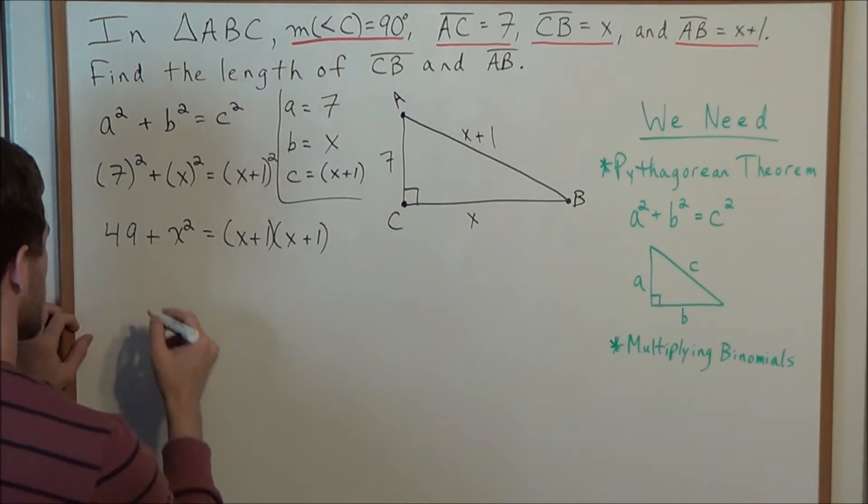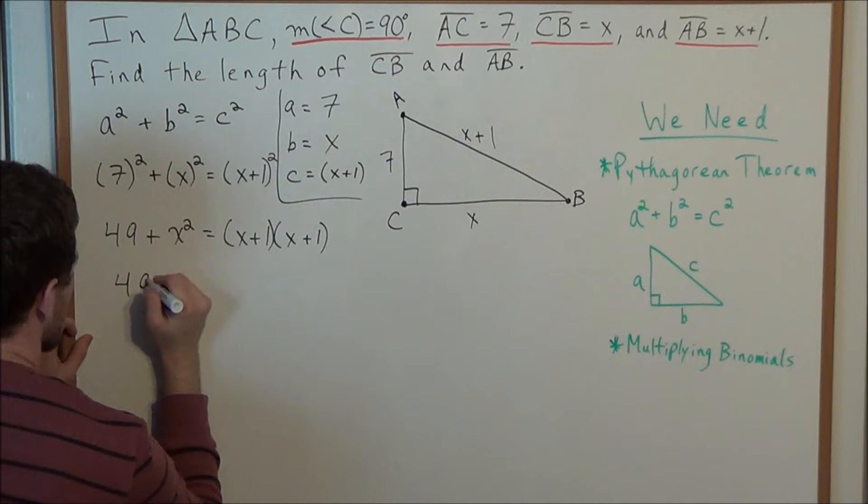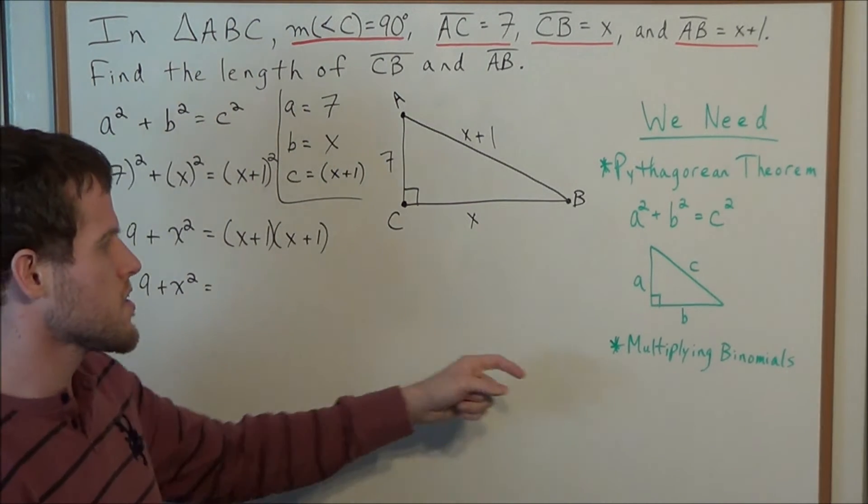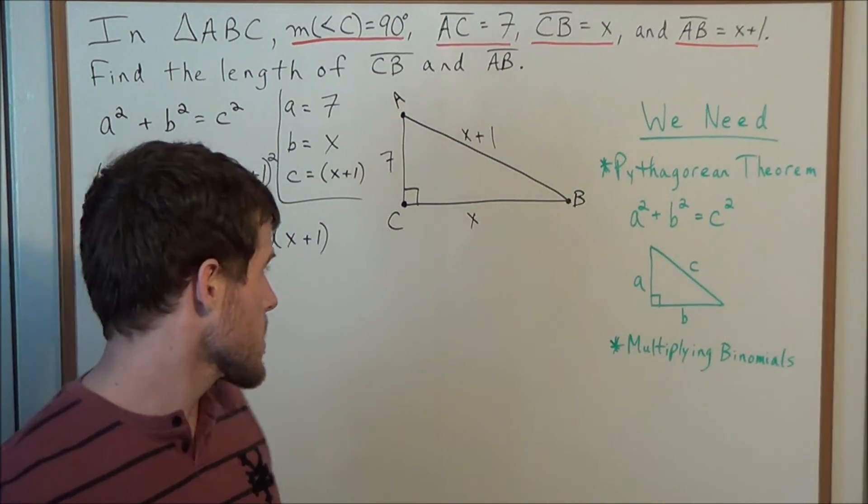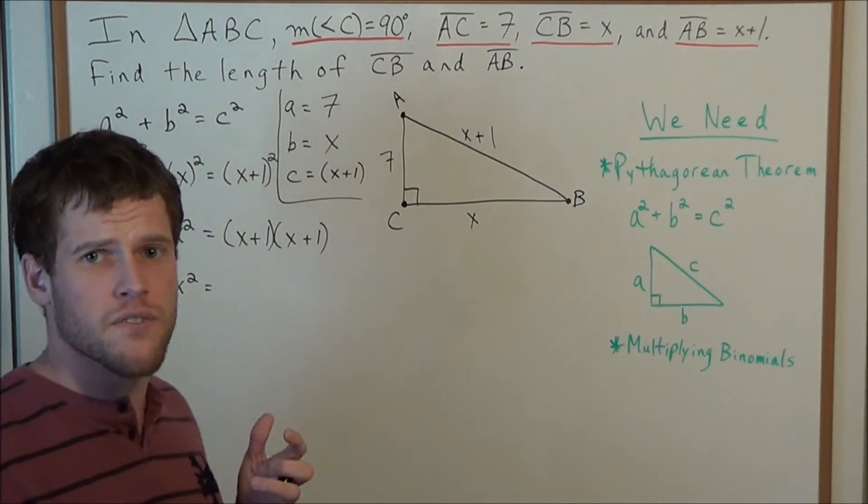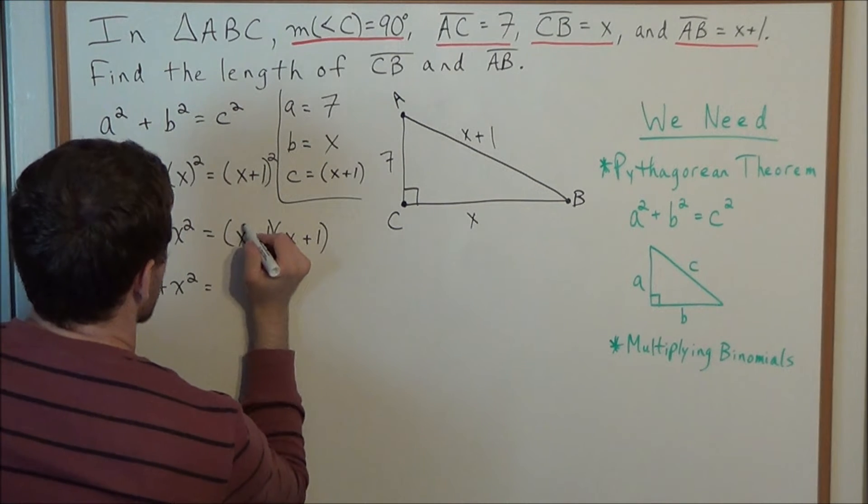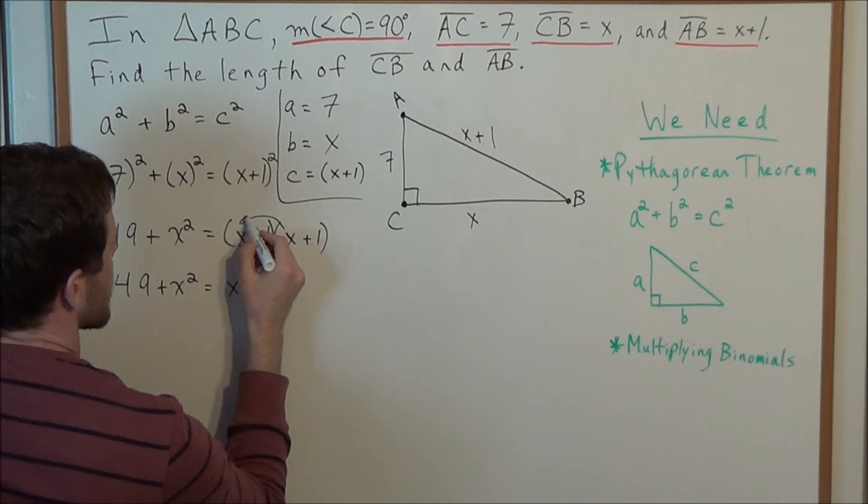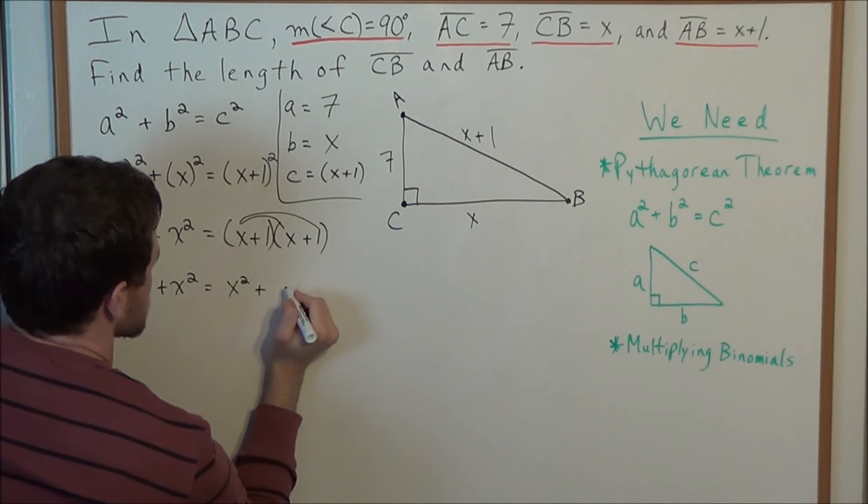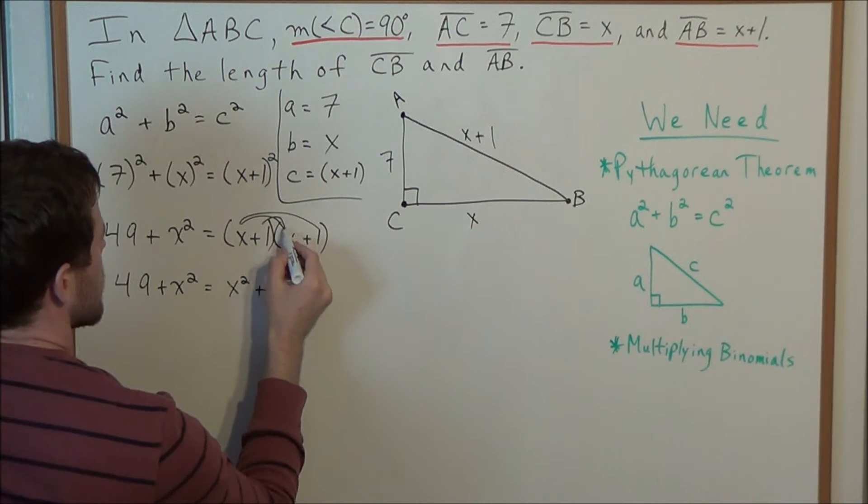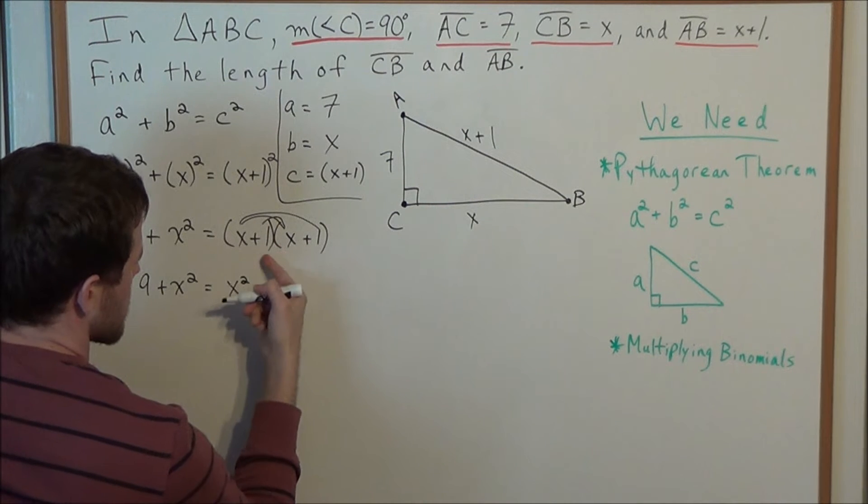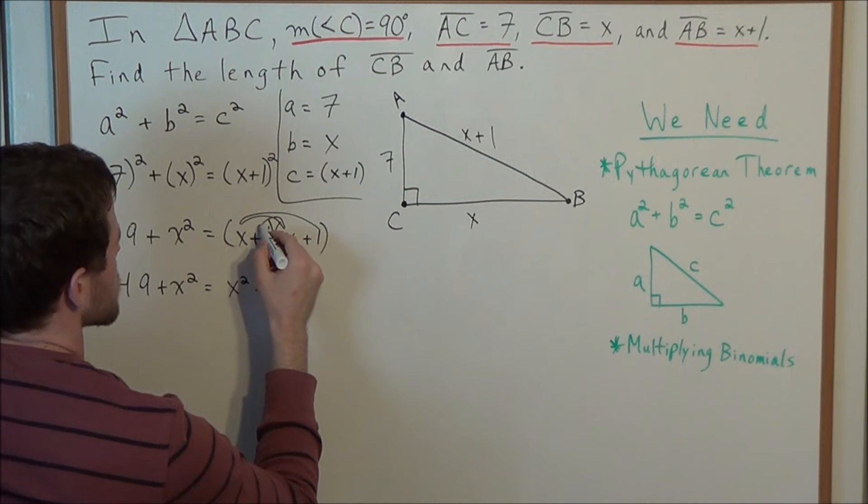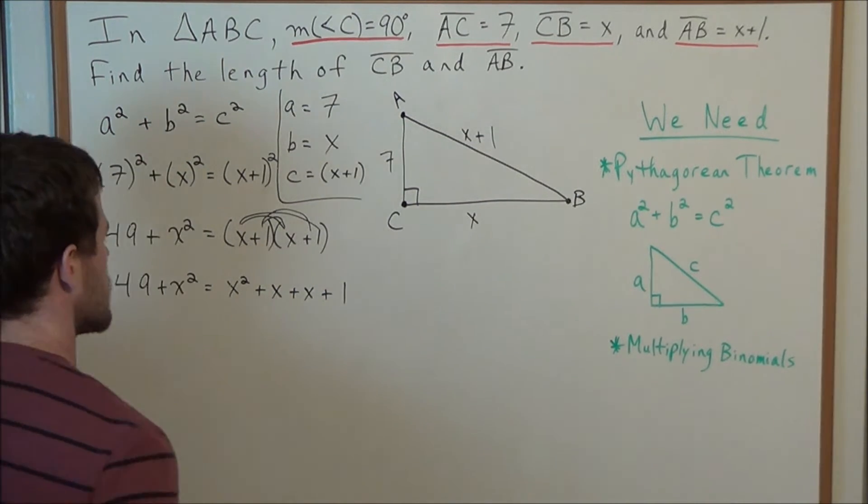And now for the next line, we could write the left hand side. We have 49 plus X squared. But now to expand the right hand side, this is where multiplying binomials is going to come in. You could think of it as foiling, whichever way it helps you. But we're multiplying, we could do X times X is X squared, and now we have X times 1 is a positive X, so we have plus X. 1 times X again to multiply the inner terms, so plus another X. And now last we have 1 times 1, so plus 1.